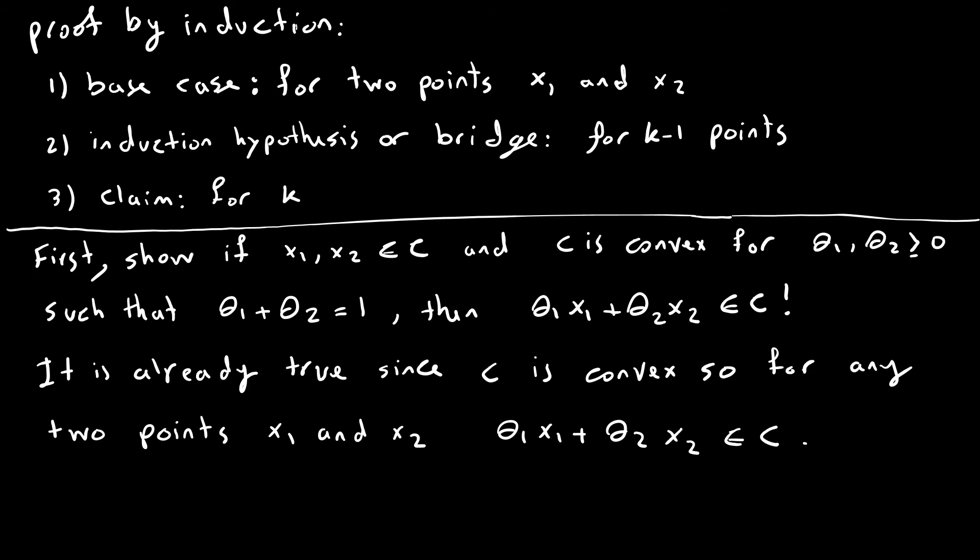Now, let's see how can we prove this. Proving this uses induction. For the induction, we need base case, and for base case, we need two points, x₁ and x₂. Next step in the induction would be induction hypothesis or the bridge for k minus 1 points. Once we have k minus 1 points true, we can go and prove it for the case we have k points. First, I need to show the base case.